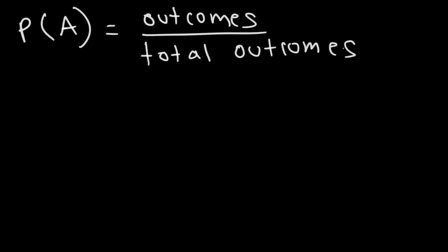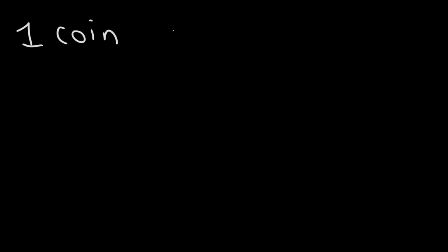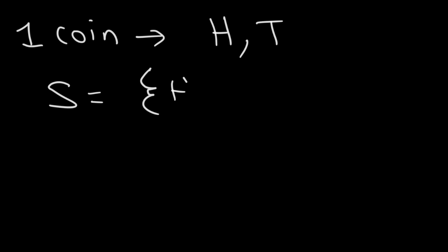Now before we go over some examples on how to calculate probability, we need to talk about something called sample space. So what is sample space? The sample space is basically the set of all possible outcomes that can occur. So let's say if we toss a fair coin — let's say a quarter. What are the possible outcomes of flipping one coin? There's only two possibilities: you can either get heads or tails. So the sample space for this situation is either heads or tails.